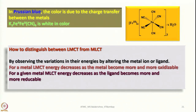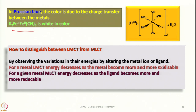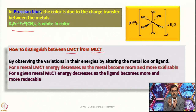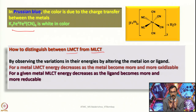In Prussian blue, the color is due to charge transfer between metals. Where both iron atoms are in the +2 state, the compound is white in color — showing the difference between the two species. Now, how do we distinguish LMCT from MLCT? If we have a moderate oxidation state of the metal and ligands capable of both accepting and donating, how do we interpret the observed color?